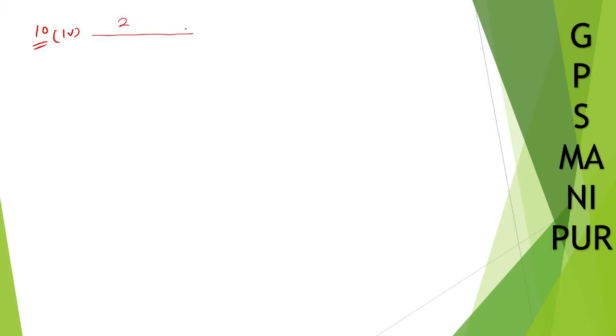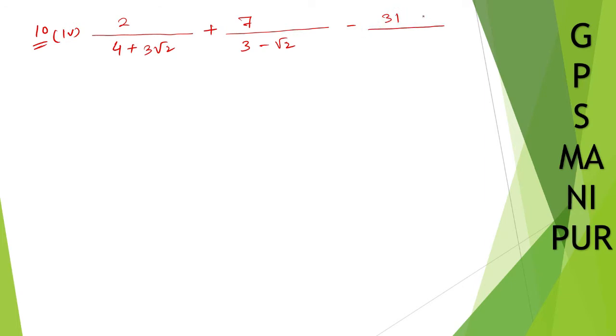Now, we are dealing with question number 10, roman number 4. Let me write down the question. The question is: 2 divided by (4 plus 3 root 2), plus 7 divided by (3 minus root 2), minus 31 divided by (1 plus 4 root 2).